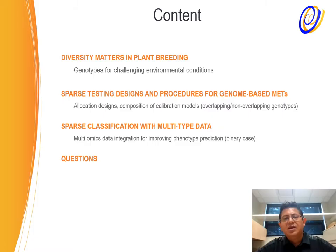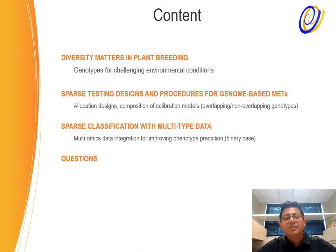First, I will talk very briefly about why diversity matters in plant breeding, especially when we are developing genotypes for challenging environmental conditions. Then I will talk about two different studies that we have been working on lately: sparse testing designs and procedures for genomic prediction, and sparse classification with multi-type data. At the end, we will have a few minutes for questions.